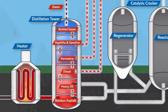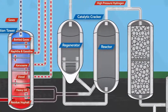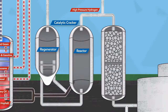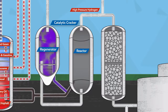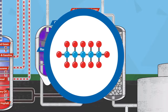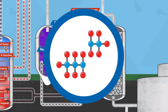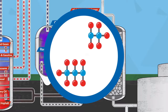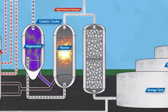Conversion processes some of the heavier components of the crude in the fluid catalytic cracker, or CAT. Here, the large heavy molecules are exposed to a catalyst that cracks them into smaller, lighter molecules that can then be turned into high-quality gasolines.